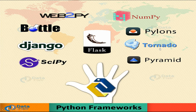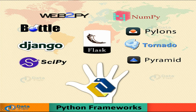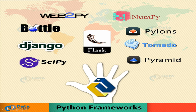Tornado is another open source web framework written in Python, noted for its excellent performance. Bottle is a micro-framework for Python used for web development. Bottle is known for its speed, simplicity, and lightweight nature. A single file can run on both Python 2.5+ and 3.x.